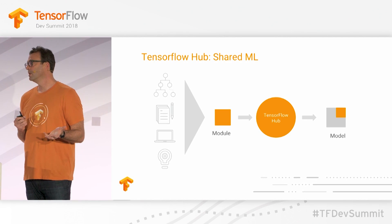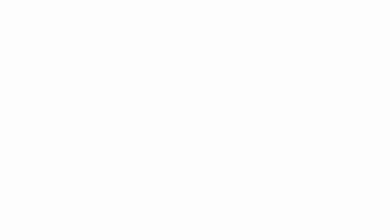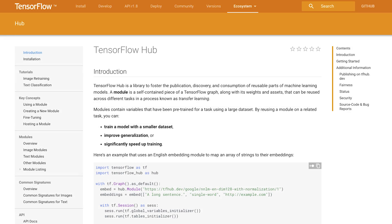The way to think about it is: a model is like a binary, and a module is like a library. A model is a binary and a module is a library — we need that on a t-shirt! So where can you find all these? Check out tensorflow.org/hub.